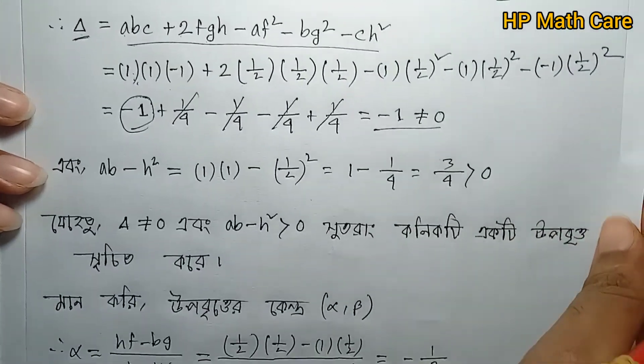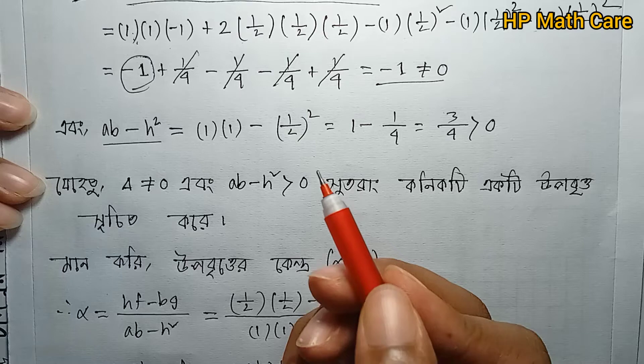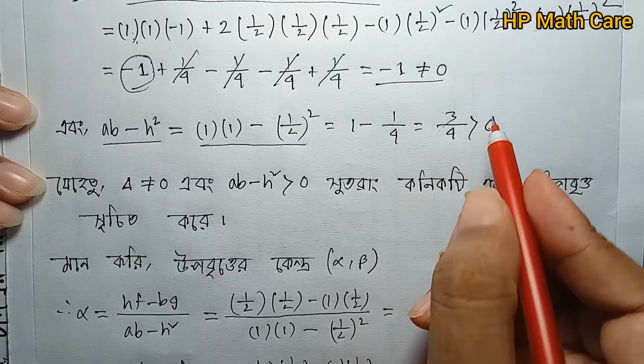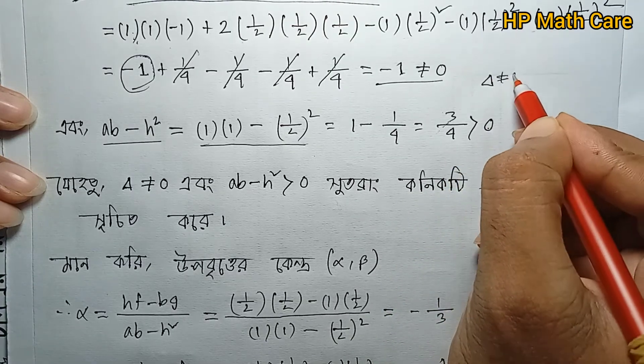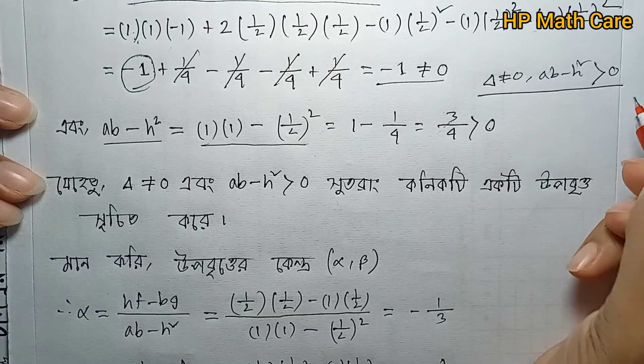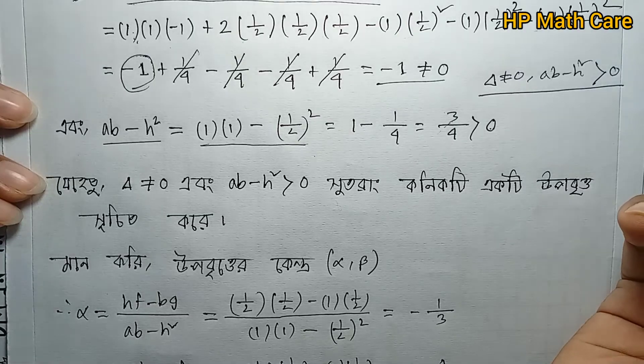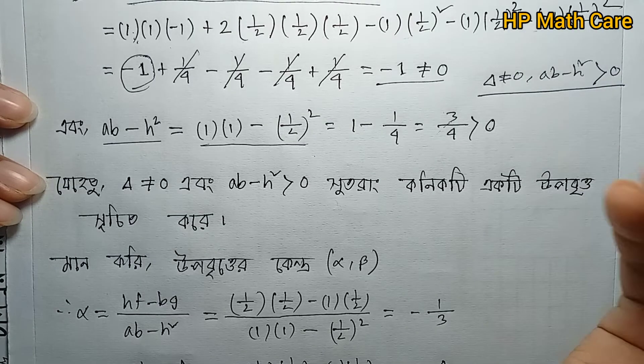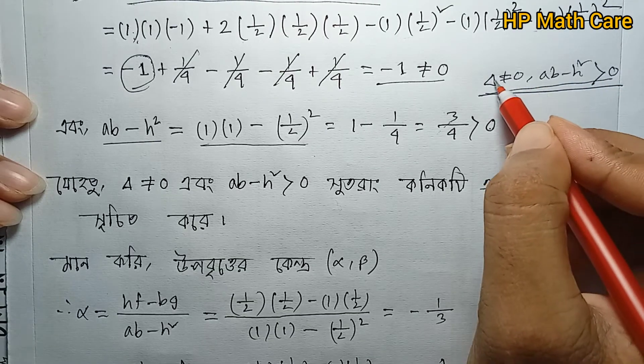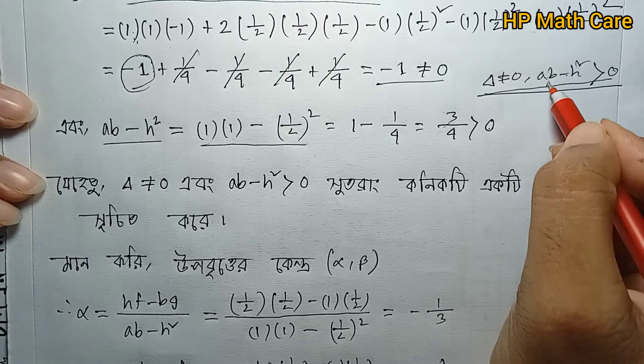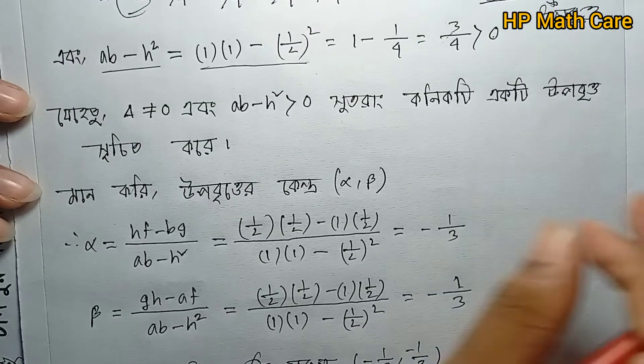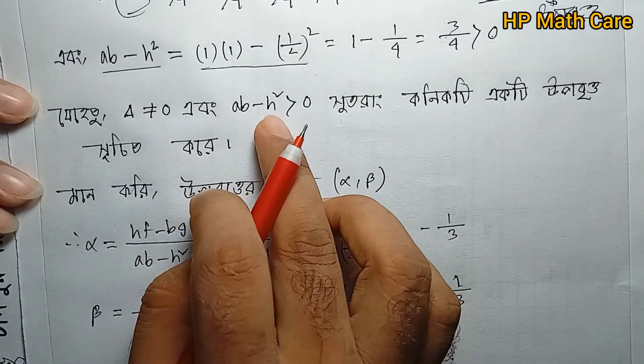This gives: -1 + 1/4 - 1/4 - 1/4 + 1/4 = -1 ≠ 0. So delta is not equal to zero. Now check ab - h²: ab - h² = (1)(1) - (1/2)² = 1 - 1/4 = 3/4 > 0.